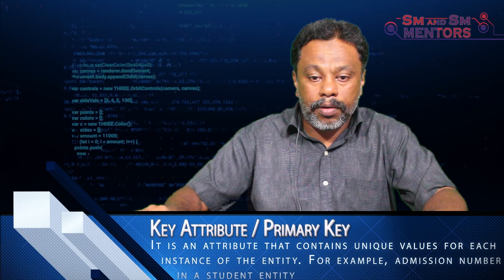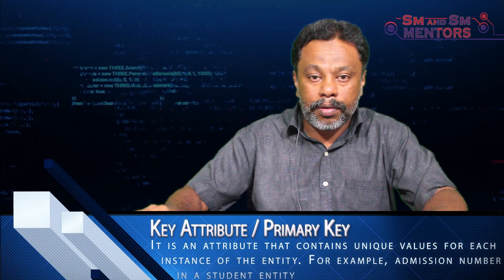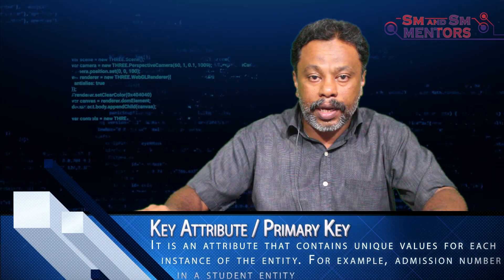Now let's talk about key attributes. A key attribute is one whose values are unique for each entity instance. That is why we have a key attribute — the primary key. For example, if you have a student entity, the Admission Number is the primary key attribute.